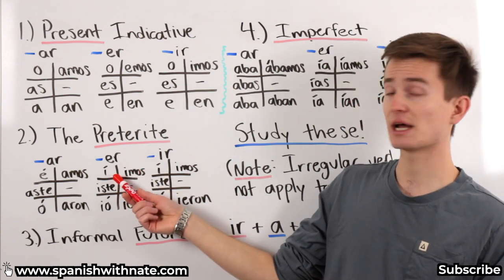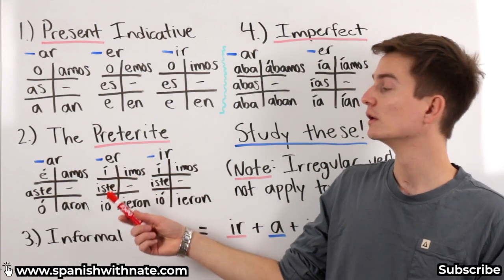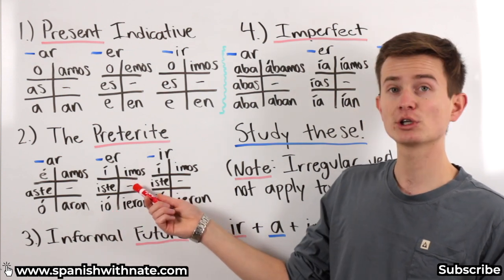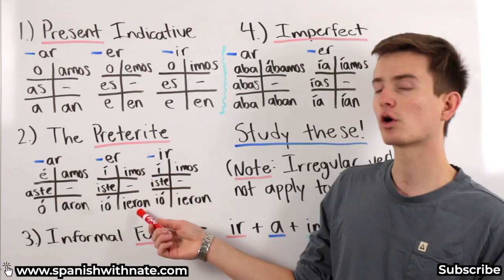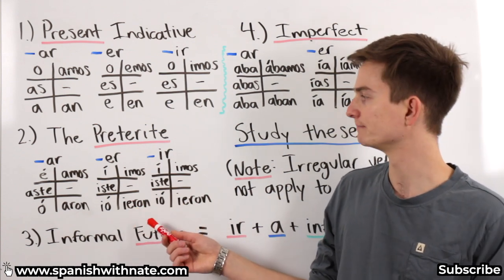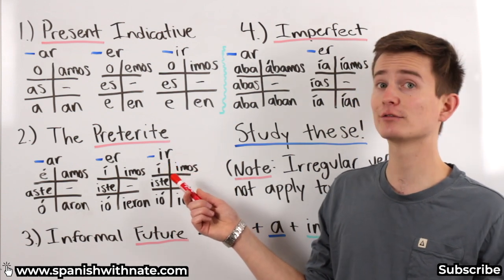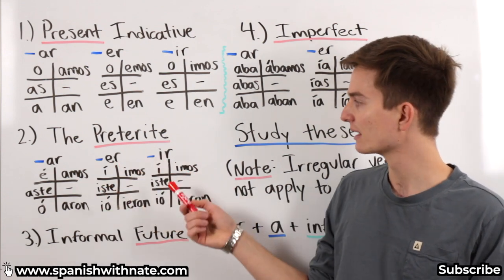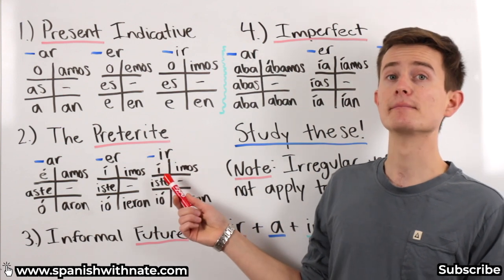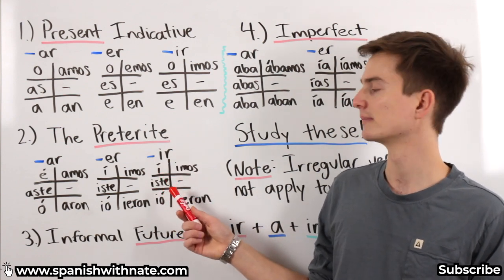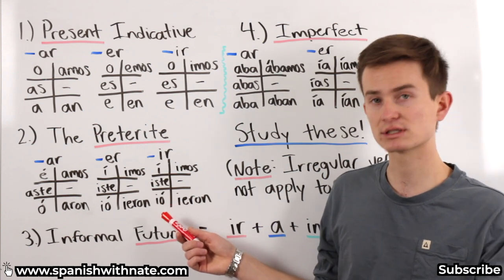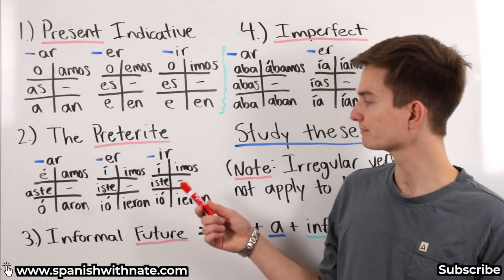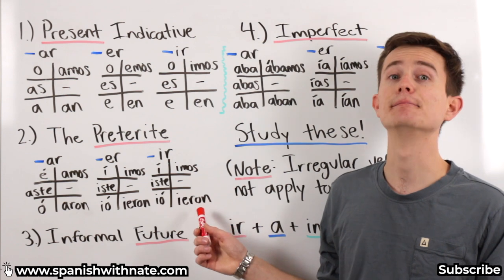Next, ER. For example, comer. Yo comí. Tú comiste. Ella comió. Comió. Nosotros comimos. Ellos comieron. Or ellas comieron. Next, IR verbs. Remember, IR verbs or infinitive verbs just end by either IR, ER, or AR. IR. Vivir. Yo viví. Tú viviste. Ella vivió. Or usted vivió. Él vivió. Nosotros vivimos. Ellos, ellas, ustedes vivieron.